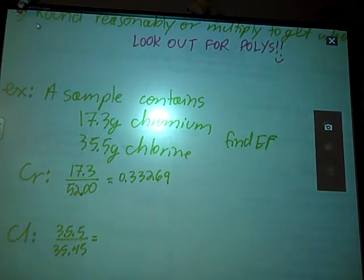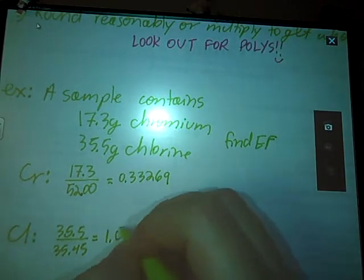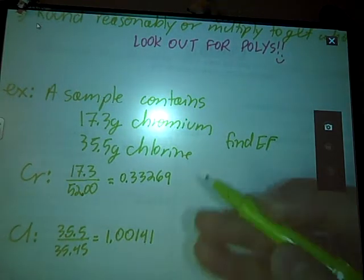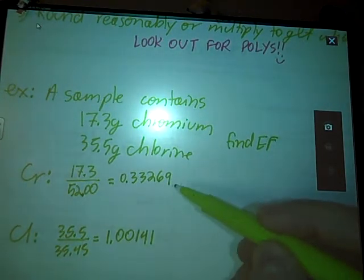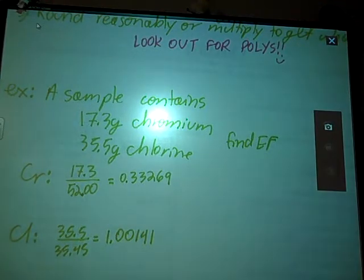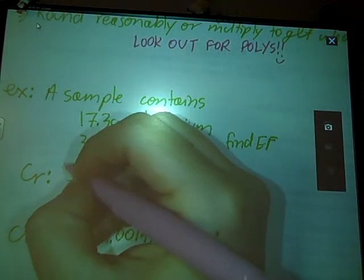Let's divide out the other one here real quick. 35.45, divide. So notice, of these two numbers, this is the smaller. So this was our step one. We converted to moles.